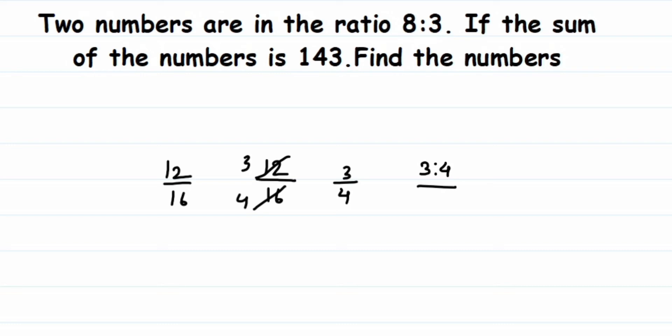Remember, whenever ratios are given, we have to assume a variable x and take the numbers as whatever ratio is given. Here I'm going to take it as 8x and 3x, so that is why we're going to assume a variable here.